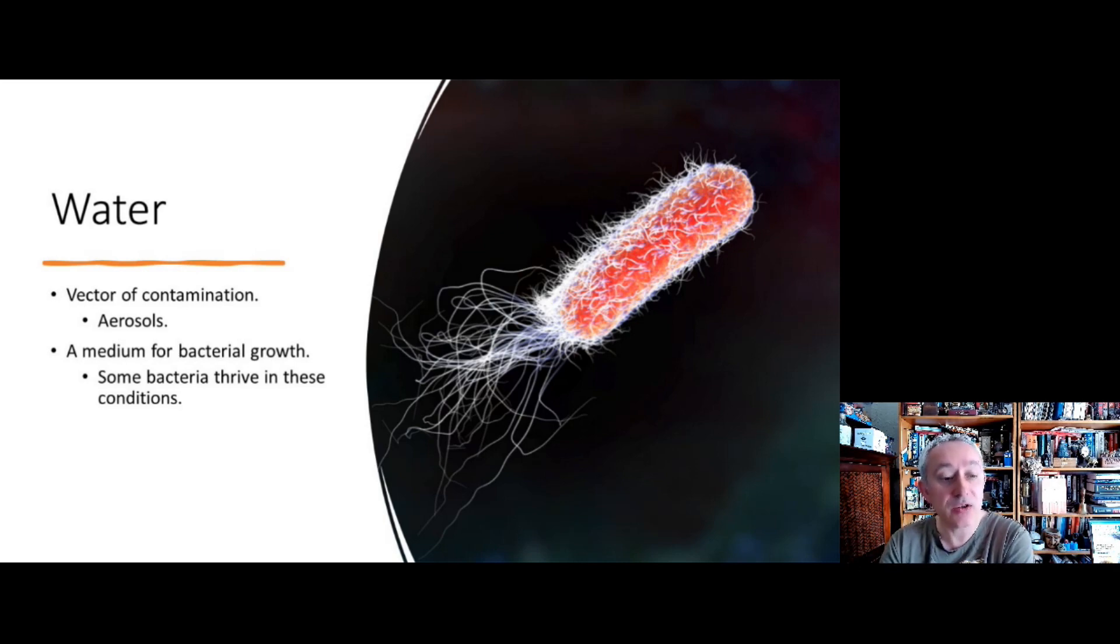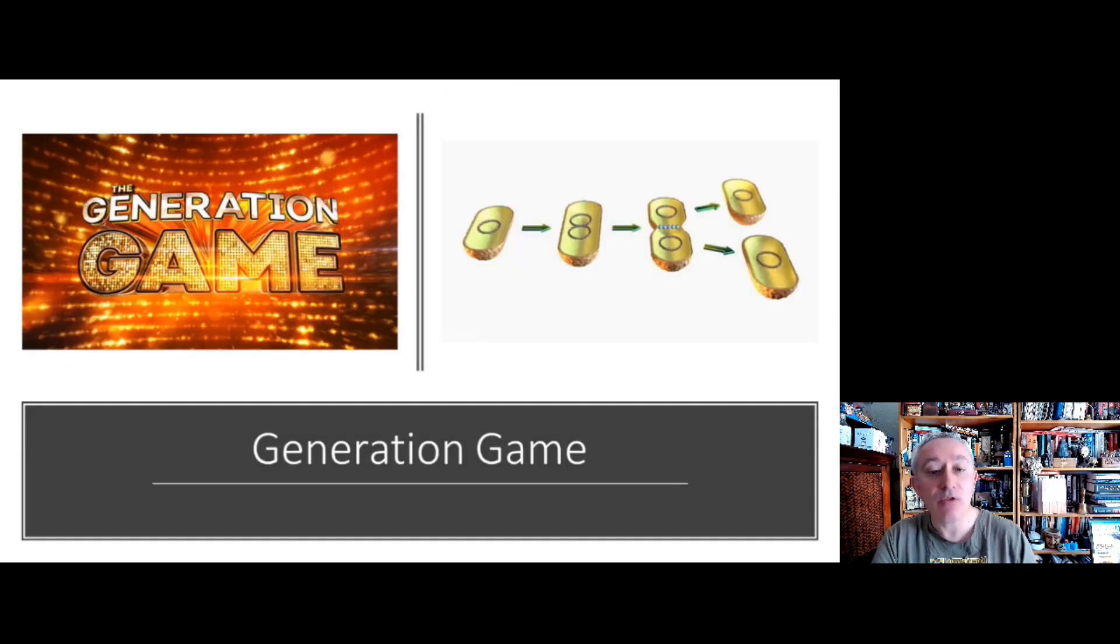The second thing about water is that there are lots of different types of bacteria. Types that we call gram negatives, which is just a reference to what color they stain in a laboratory, which not only survive in water but they also thrive in water. By thriving we mean that they can multiply in number.